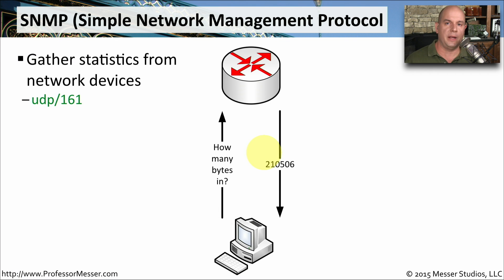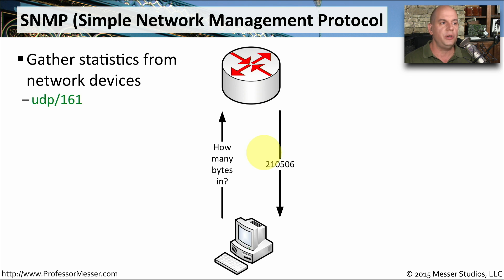SNMP is the Simple Network Management Protocol. This is used by your network management functions to query devices like your switches, routers, and firewalls to get information about how that device may be performing. It uses UDP port 161 to facilitate this communication.